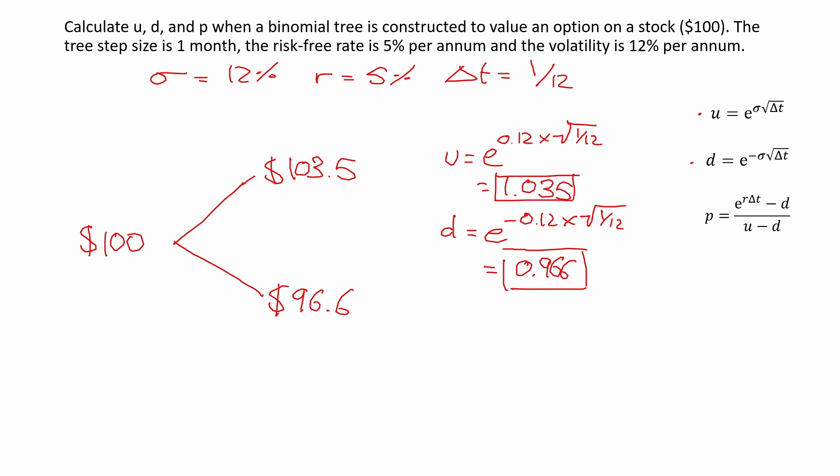And the last thing to do is to calculate p, the probability, which is basically the probability of the stock price going up. So here we have the formula. And again, for this we need the risk-free rate r, the time period, and then d and u, which we have—everything which we have. So let's plug this in.